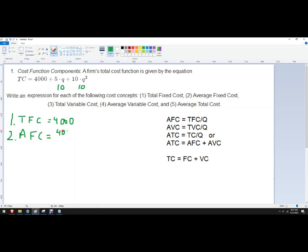So it's 4,000 divided by Q. We're going to use lowercase Q because that's the firm's quantity. All right, number three now.